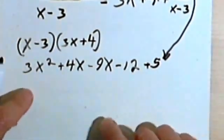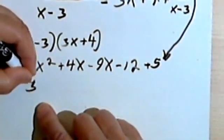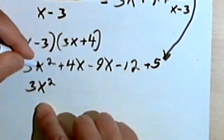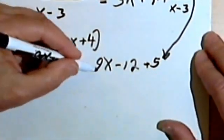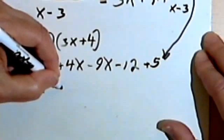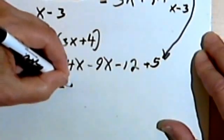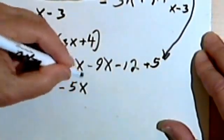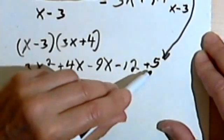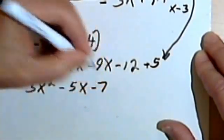And now I'm going to combine my like terms. So I've got 3x squared plus 4x minus 9x. Well, plus 4 and minus 9 gives me negative 5x. And I've also got negative 12 and positive 5. That's going to be negative 7.